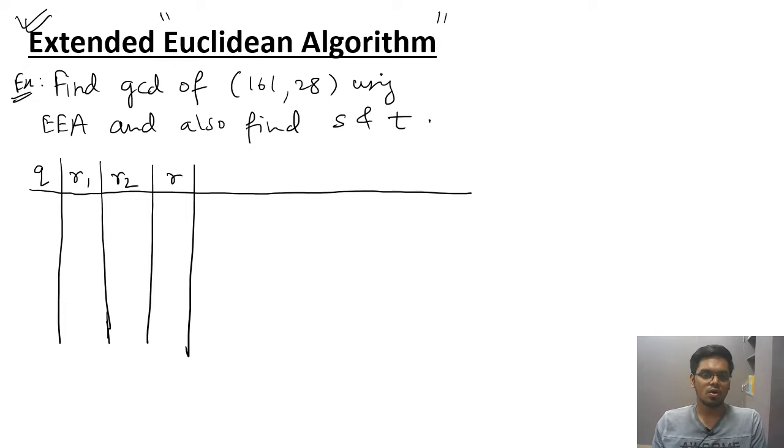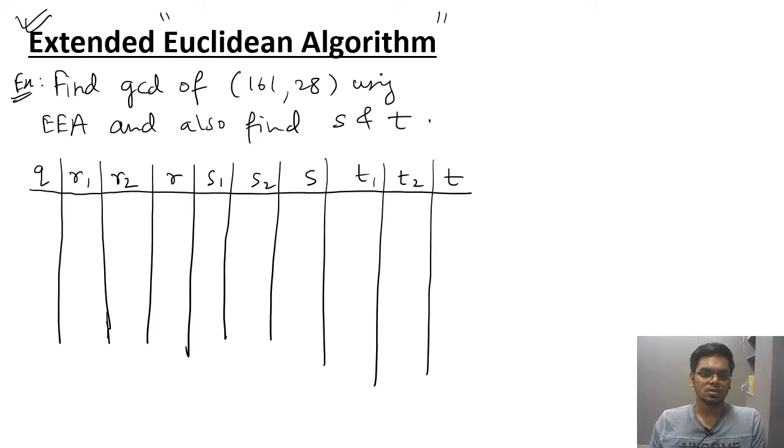Now we have extra columns: S1, S2, S, T1, T2, and T. You can see these six extra columns and there is also some assumptions and equations. So write it down as well.